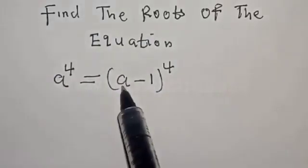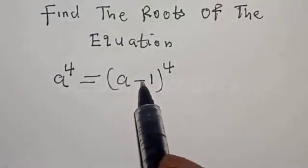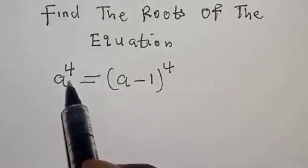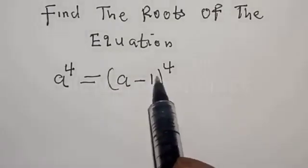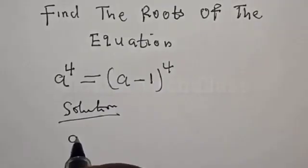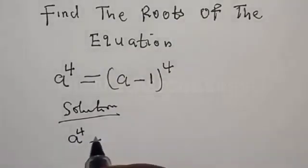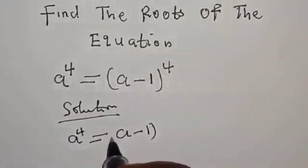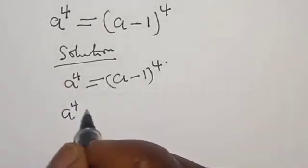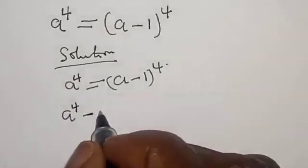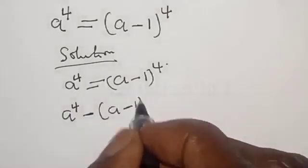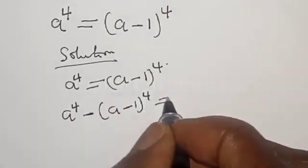A raised to power 4 is equal to A minus 1 raised to power 4. I want to quickly find the roots of this equation. We rearrange it as A raised to the power 4 minus A minus 1 raised to the power 4, equal to 0.